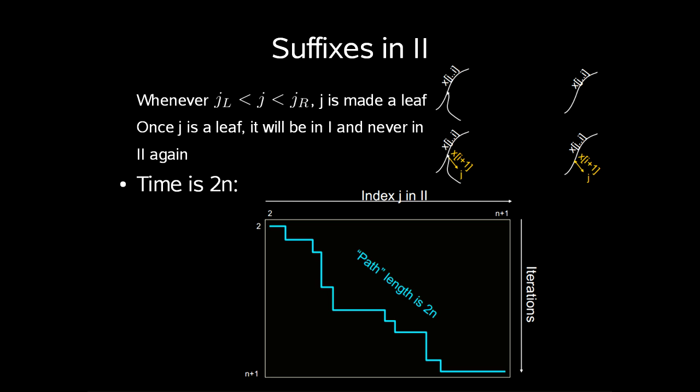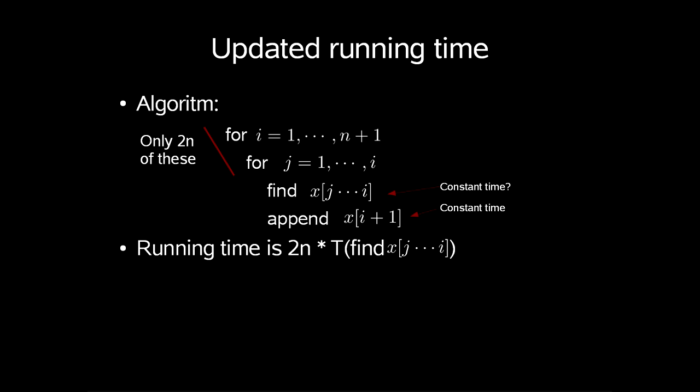We have to take a look at how much time we take to go from 2 to 1. So we handle j in 2, or implicitly in 3, time 2n. Because the path in our index j in part 2 and the number of iterations can at most form path length of 2n. So our running time is now down to 2n times the time it takes to find x[j..i]. Because we stated that appending x would take constant time. So hopefully we can show that t of finding x[j..i] can be done in constant time.